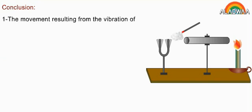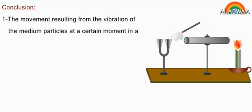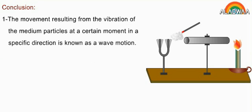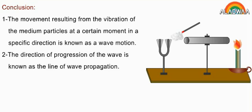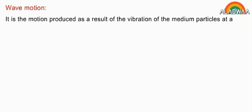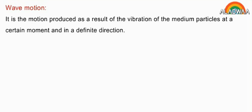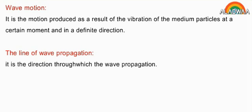The movement resulting from the vibration of the medium particles at a certain moment in a specific direction is known as wave motion. The direction of progression of the wave is known as the line of wave propagation — it is the direction through which the wave propagates.